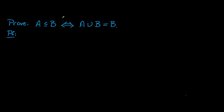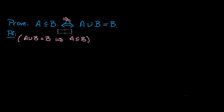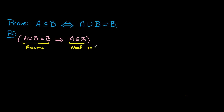We've already shown the proof in that direction. Now we need to go in the opposite direction: we're trying to show that A union B equals B implies A is a subset of B. We're assuming A union B equals B and trying to show A is a subset of B. So let's start the proof: assume A union B equals B.